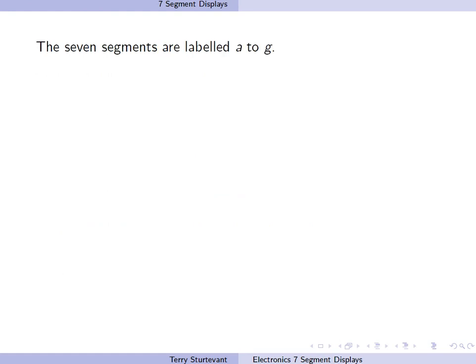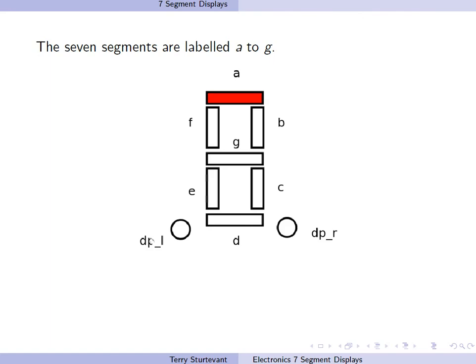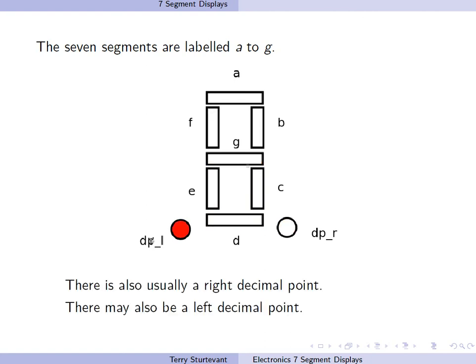The seven segments are labeled A to G. There is also usually a right decimal point. There may also be a left decimal point.